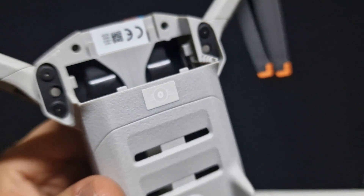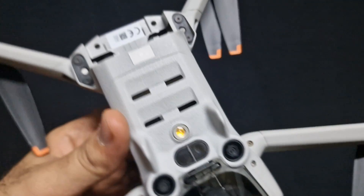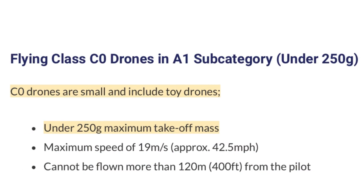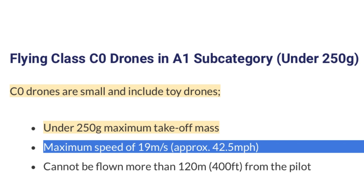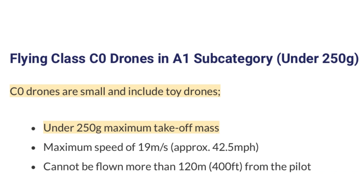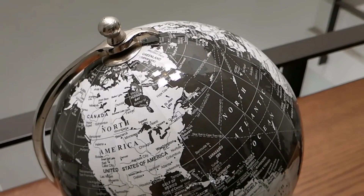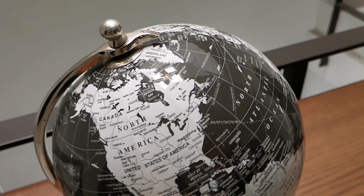The C0 class label will be visible somewhere on your drone. The main requirements are the drone's weight not exceeding 250 grams during takeoff, a maximum speed of 42 miles per hour, and the crucial 120 meter height restriction above the drone's current position. Keep in mind that drone regulations can vary across regions, so always check the appropriate sources for your location.